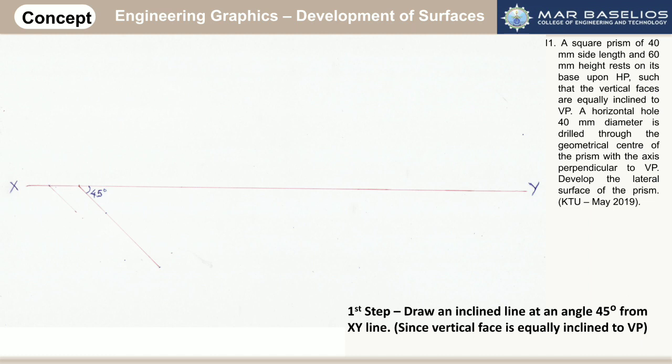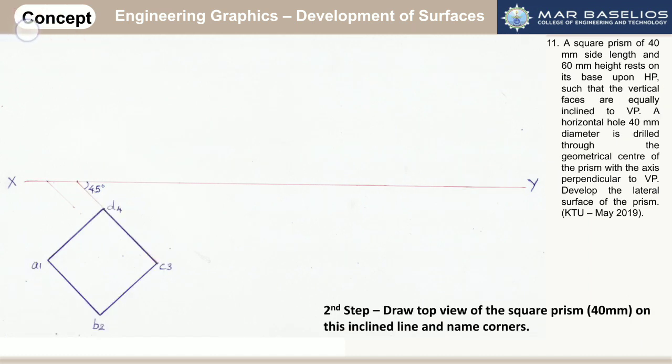In the question, you are asked to place the vertical faces equally inclined to VP. That means one base edge of the square prism should be placed at an angle of 45 degrees. To satisfy that, from the XY line first you start with a 45 degree line, and on this 45 degree line you draw the top view of the square prism, which will be a perfect square.